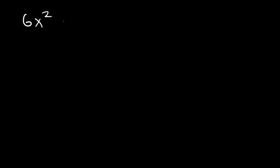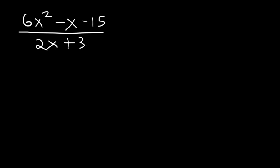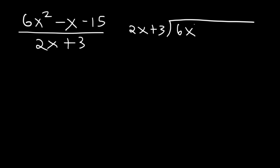Now let's try this example: 6x squared minus x minus 15, divided by 2x plus 3. Use long division to simplify the expression. Put 2x plus 3 on the outside and 6x squared minus x minus 15 on the inside. Divide: 6x squared divided by 2x is 3x.